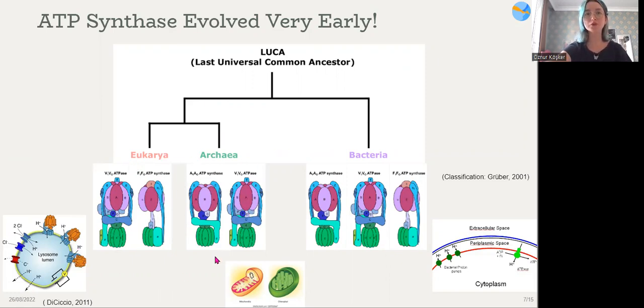F type is the one that is found in mitochondria, in chloroplasts of eukaryotes and in cellular membranes of bacteria. V type is found in some organelles, such as lysosomes. And A type is found in archaeal cellular membranes and bacterial cellular membranes.